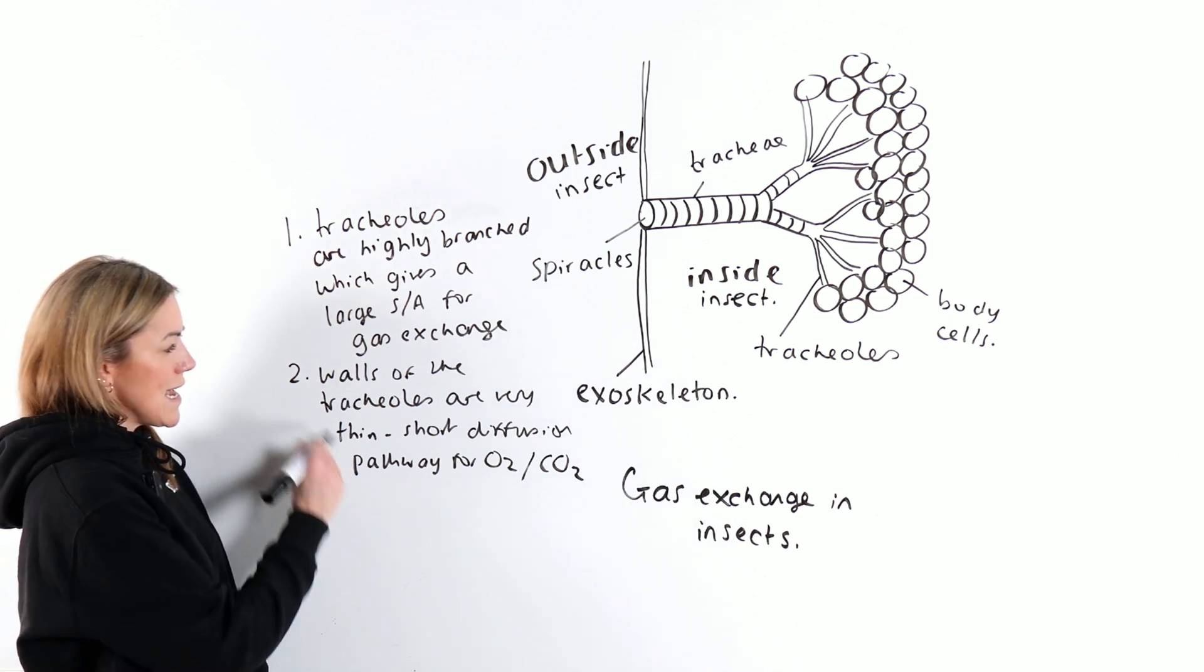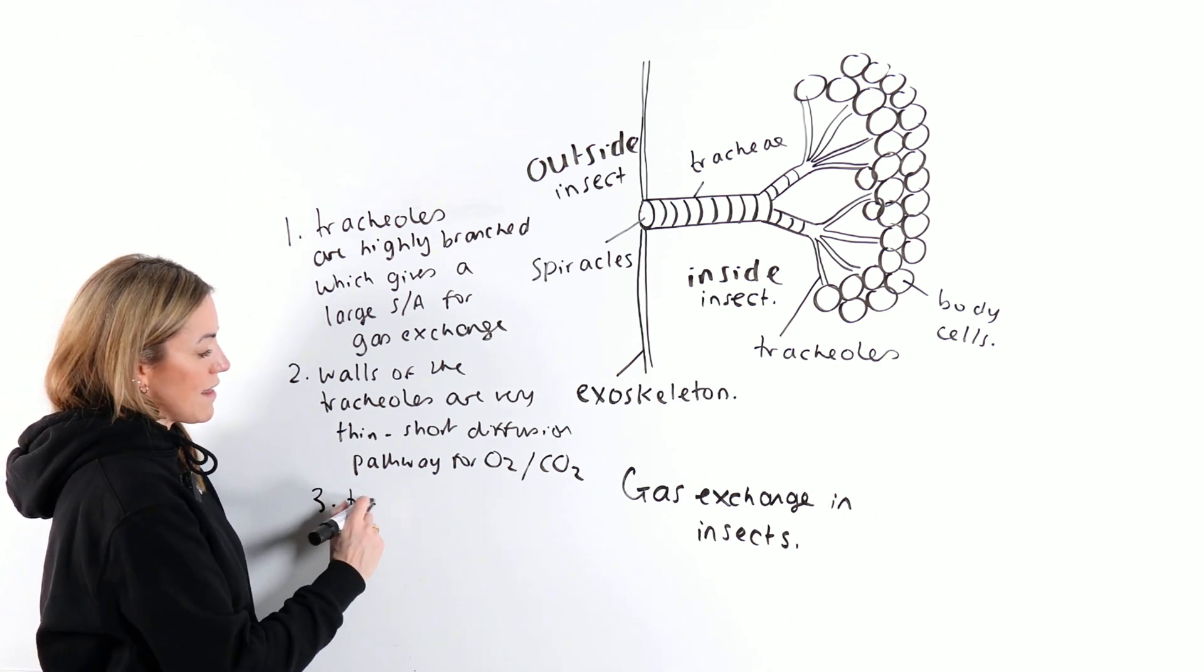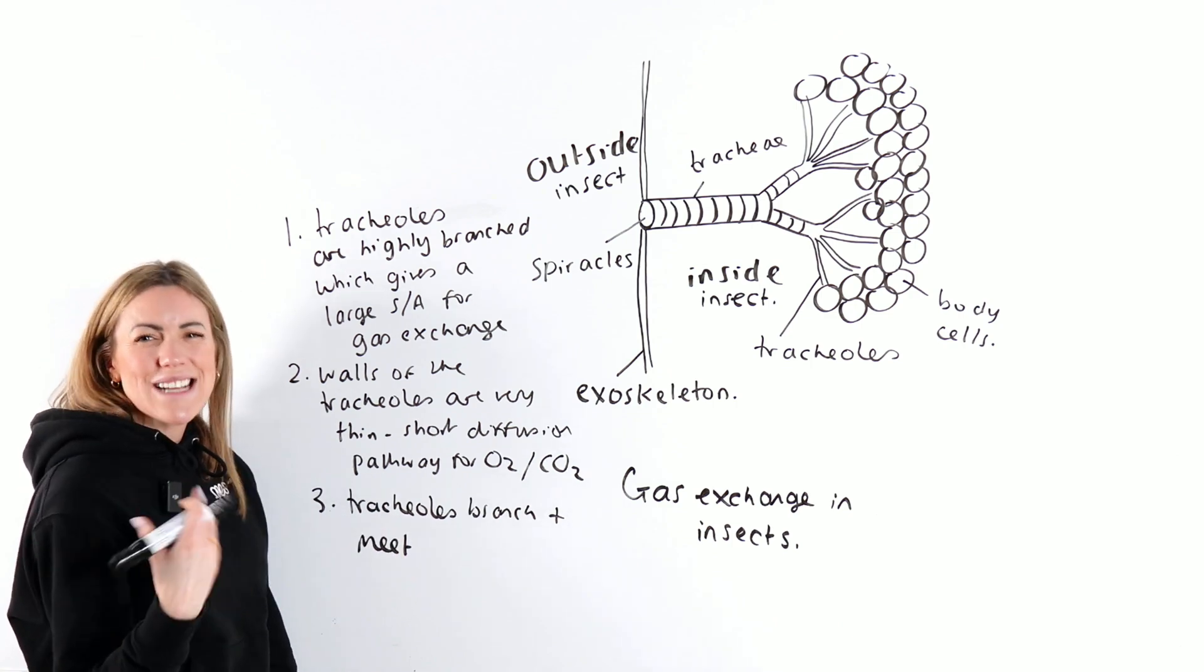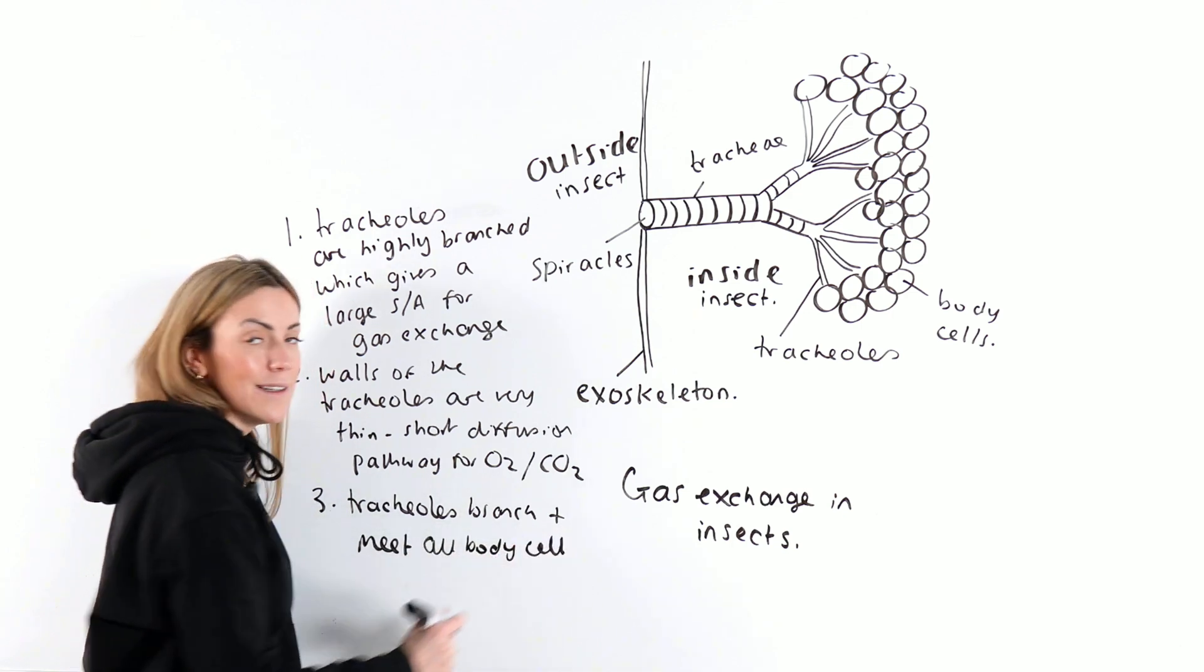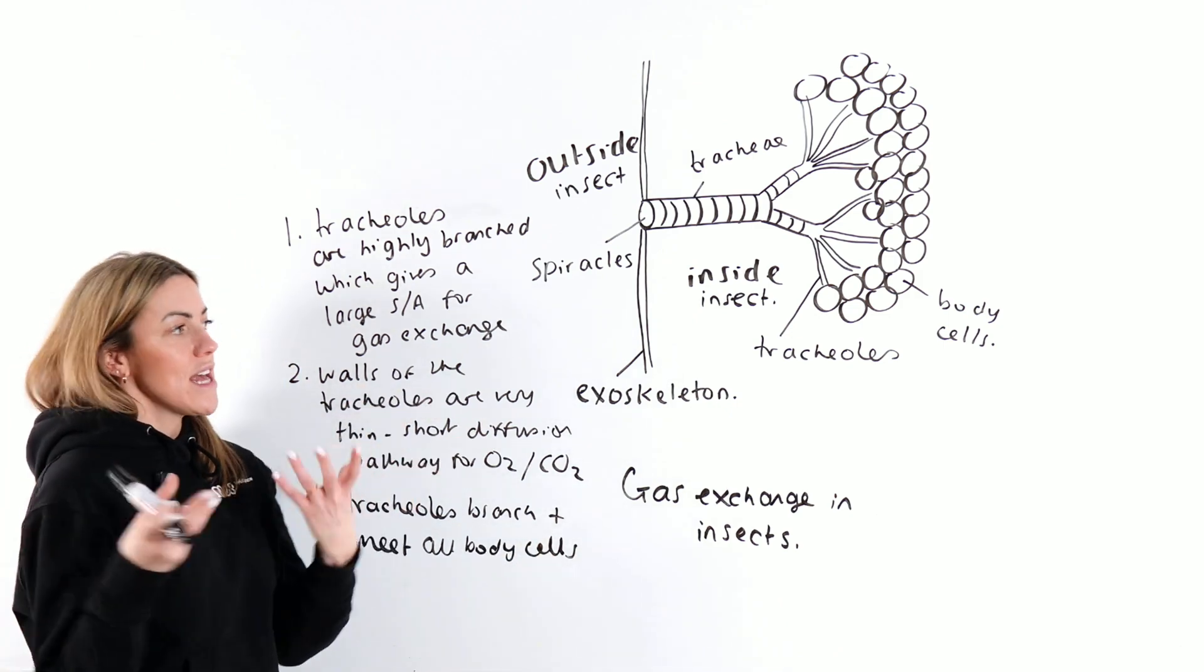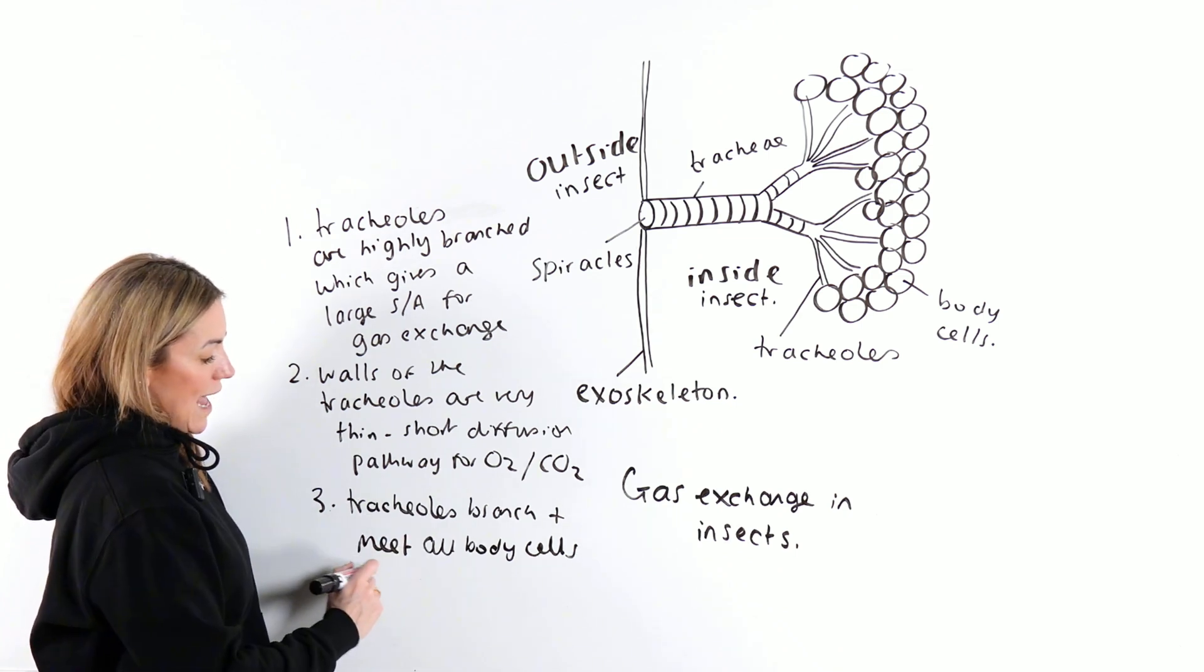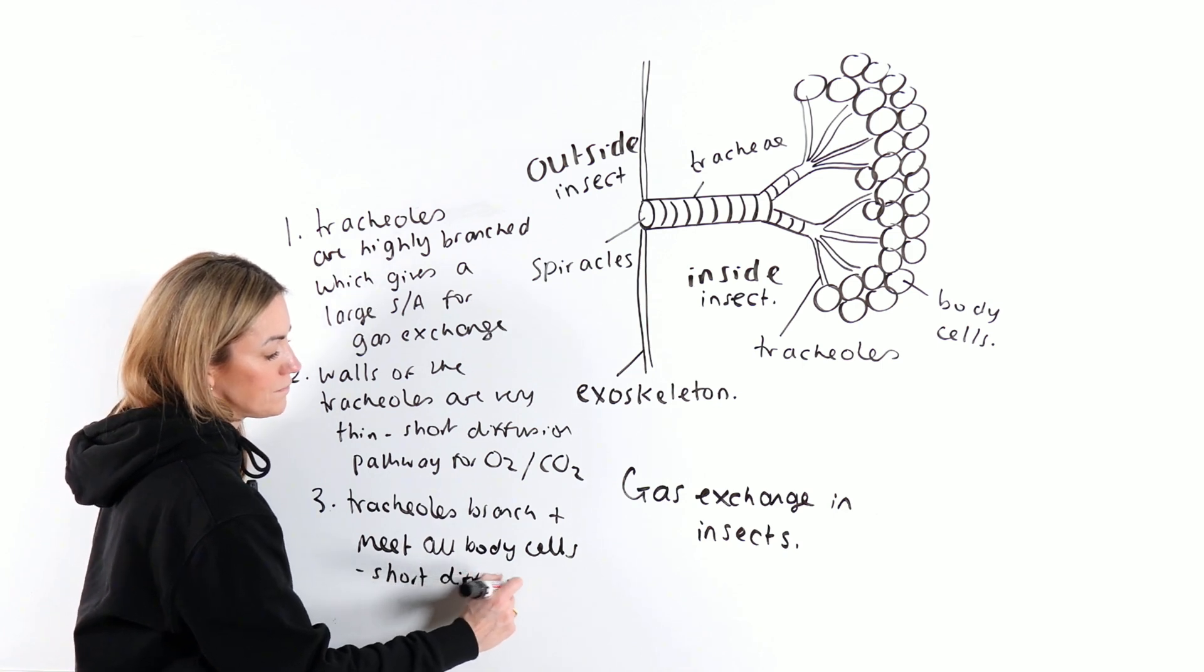You can also say that the tracheoles branch and meet or are next to all body cells. So no body cell is far away from a tracheole because they're so highly branched, they're going to meet or be very close to every single body cell in that insect's body. So again, that gives a short diffusion pathway.